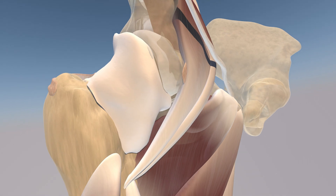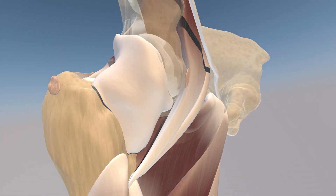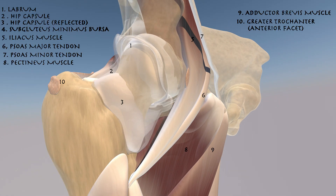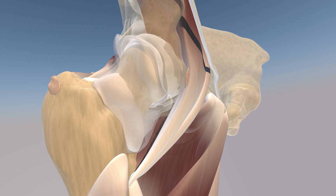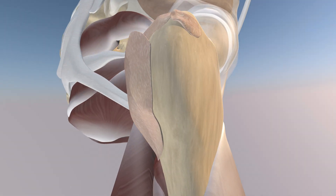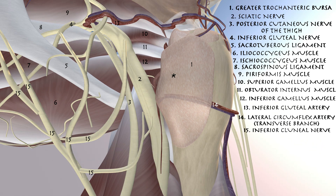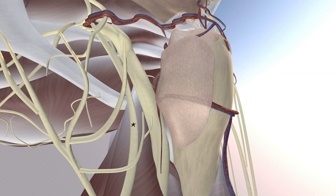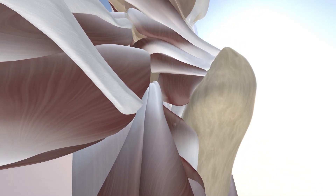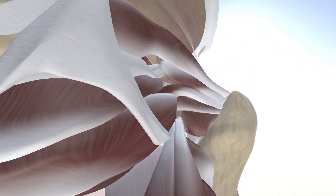We just removed the pubofemoral ligament and now we're making the capsule translucent. You can appreciate the reflected portion of the capsule over the femoral neck. Now we're rotating posteriorly — you can appreciate the greater trochanteric bursa, the sciatic nerve, the posterior cutaneous nerve of the thigh, as well as the inferior gluteal nerve and vasculature.